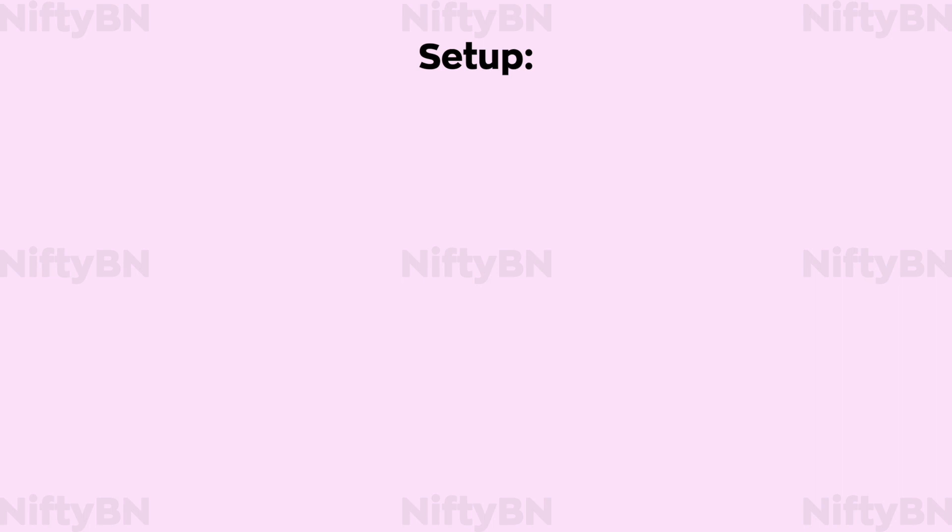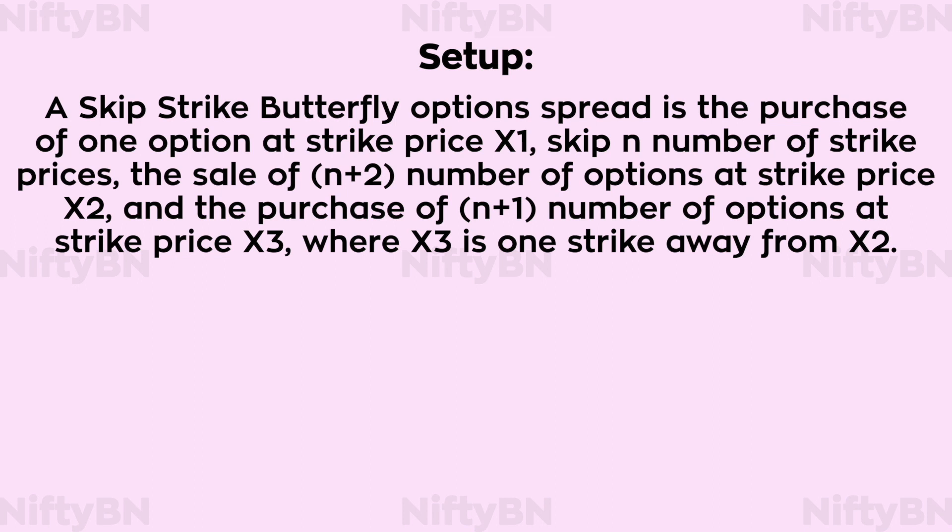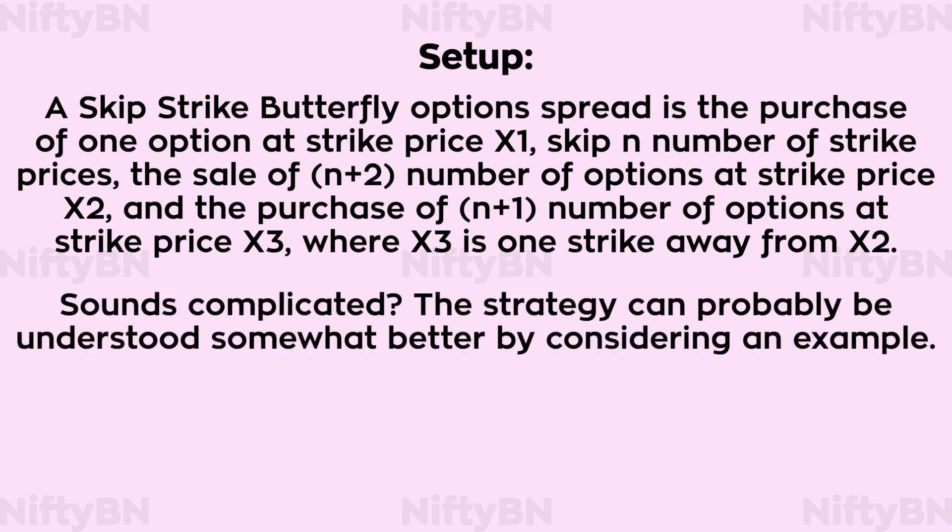A skip strike butterfly option spread is the purchase of one option at strike price X1, skip N number of strike prices, the sale of N plus 2 number of options at strike price X2, and the purchase of N plus 1 number of options at strike price X3, where X3 is one strike price away from X2. The strategy can probably be understood somewhat better by considering an example.